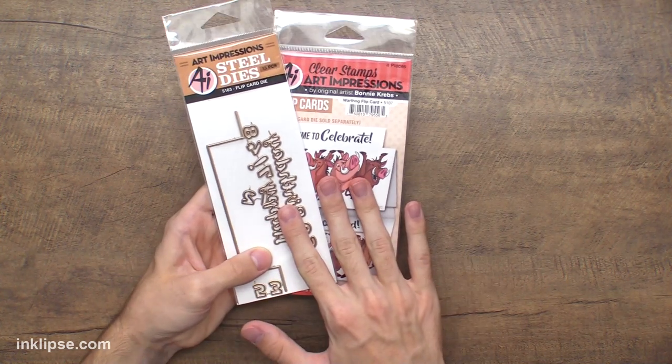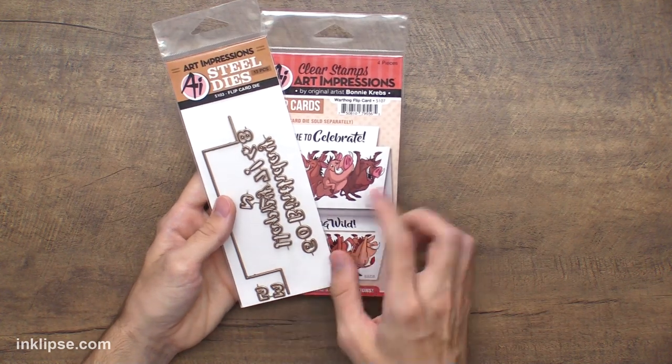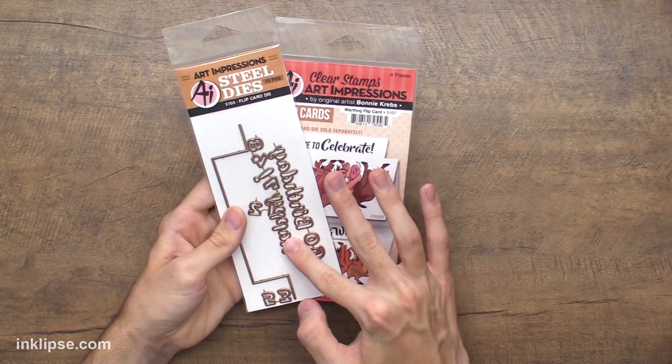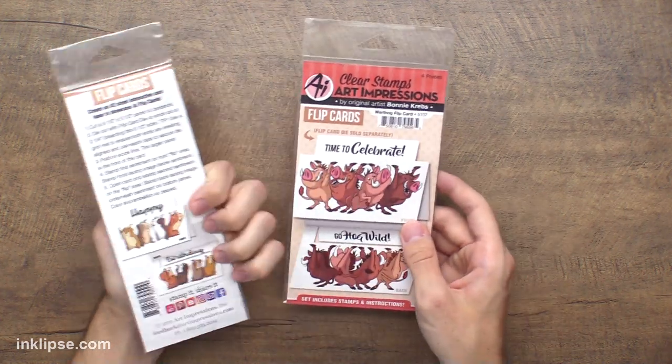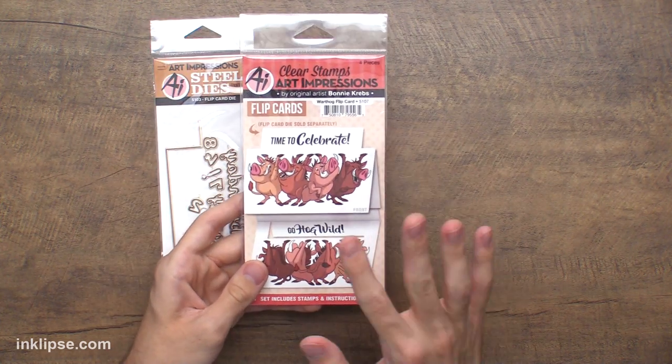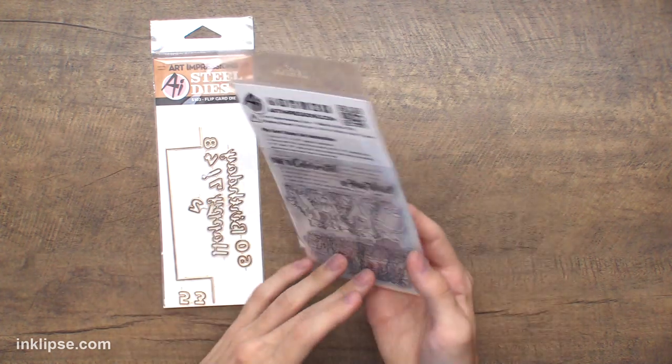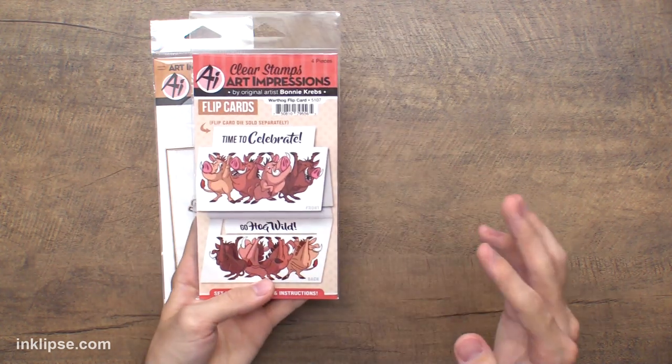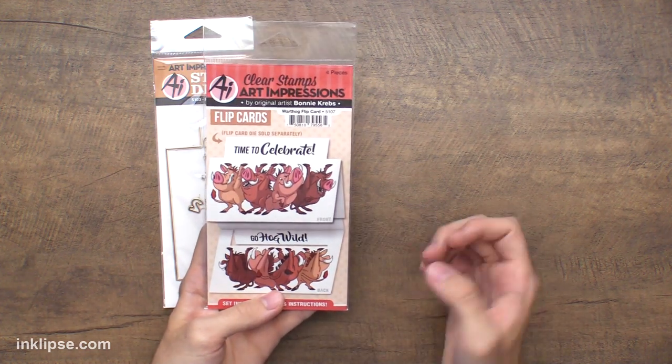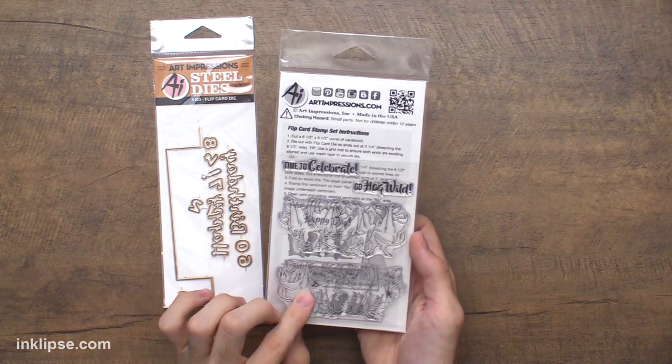Art Impressions sent me a few products and these really caught my eye. There's the flip card die and I wanted to make this for a long time. They give you the dies, a couple different words in here, and tons of instructions. They've designed some stamp sets to work perfectly with it. I think they're hogs, like the little Lion King character, with front and back images and sentiments. I'll link all the products I use in today's video down below in the description.